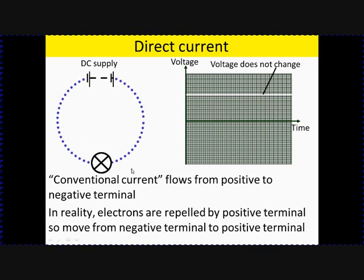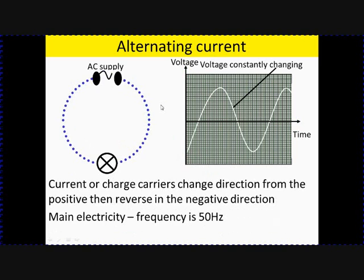But let's try and ignore that if we can help it. The current goes from positive to negative. What's happening to the potential difference, the voltage? Well, it's a constant. So if we put it on an oscilloscope, we'll just get this horizontal line. The voltage is the same all the time. If we do the same thing with AC...